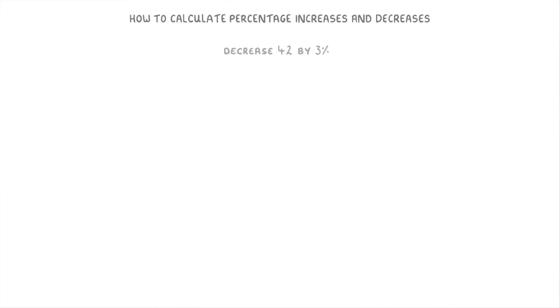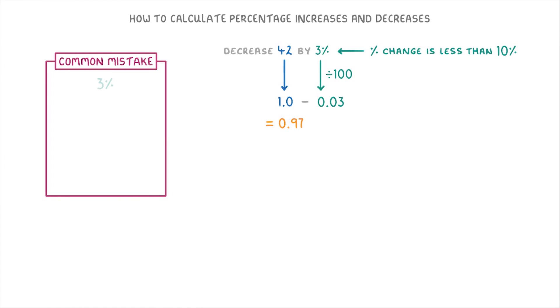Now, one thing to watch out for with these is when the percentage change is less than 10%, like here where we're trying to decrease 42 by 3%. 3% is equivalent to 0.03, so we'd have to do 1 minus 0.03 to give us 0.97 as our multiplier. A really common mistake here would be to think that 3% is 0.3, and do 1 minus 0.3 to get 0.7 as the multiplier instead. So just watch out that you don't make this mistake and remember to divide your percentages by 100.